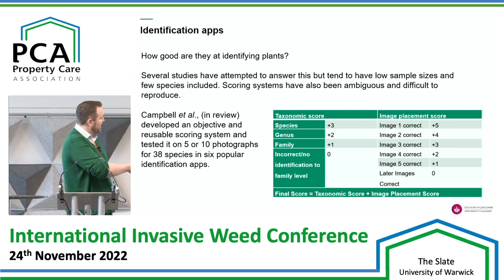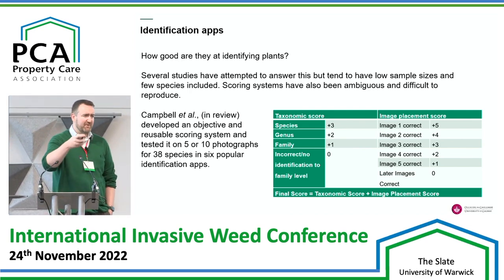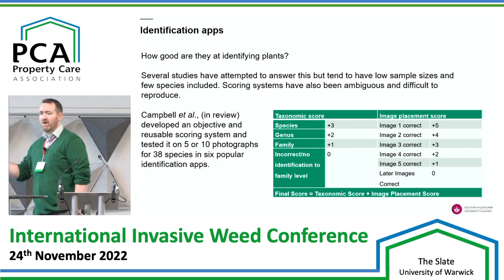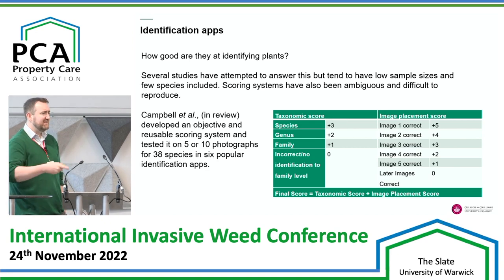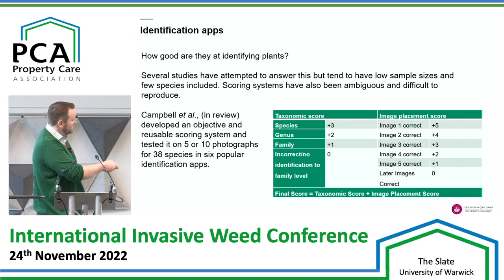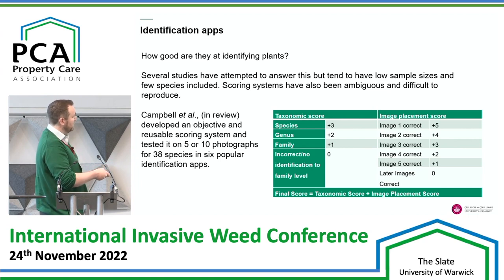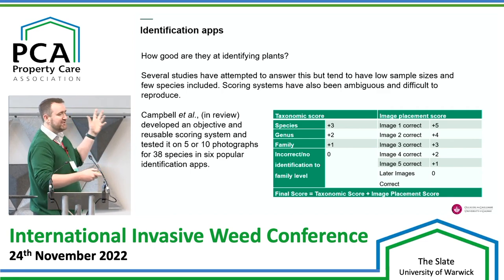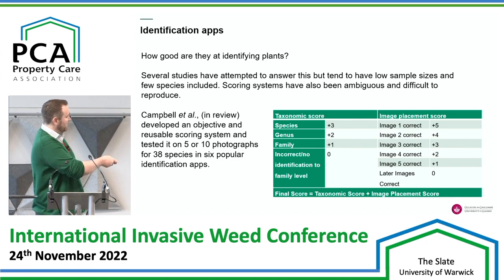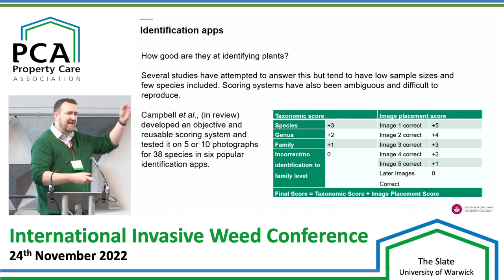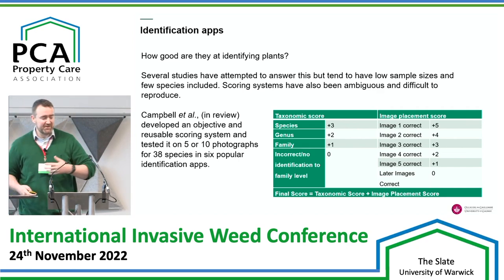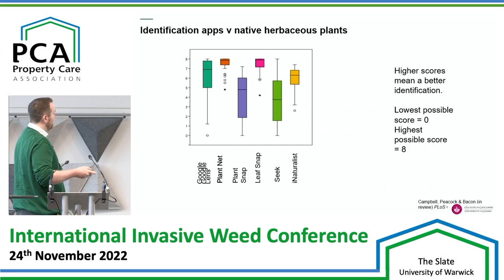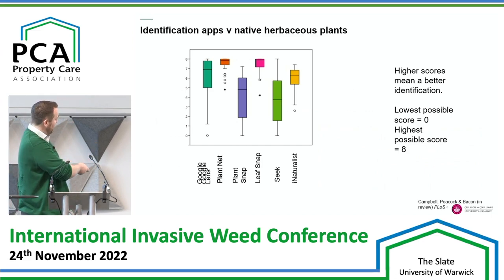Karen and her team — Campbell et al — devised a scoring methodology, since all the existing research on how good these apps were wasn't particularly insightful or consistent. They put together quite a comprehensive scoring system: if the app gets it correct on the first attempt it scores five, and if it gets it to species level it gets an extra three, so eight points total. Going down from there — if it gets the second image correct, the third, or the fourth, slightly fewer points each time. If it only gets to genus or family level, you get fewer points again. They applied that to the most common apps: Google Lens, PlantNet, PlantSnap, LeafSnap, Seek, and iNaturalist.